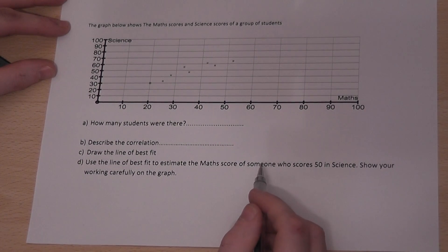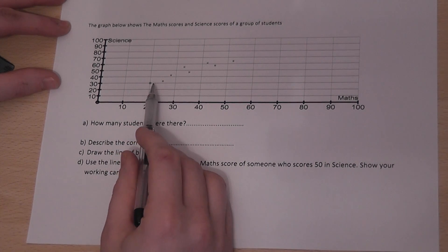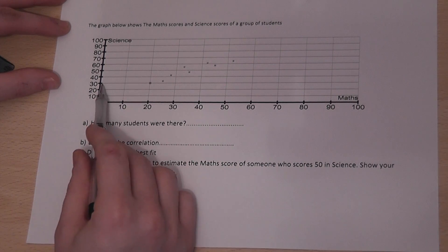This video looks at scattergraphs. This graph shows the test scores of a number of pupils. So for example, this dot is a student who got 20 on a maths test and 30 on a science test.